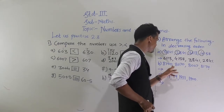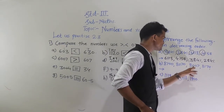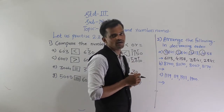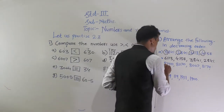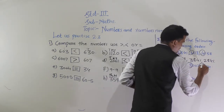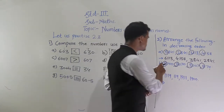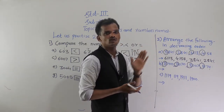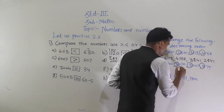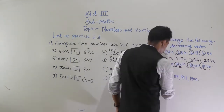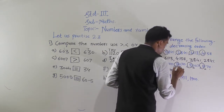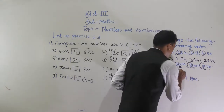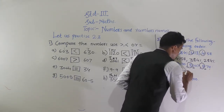Next, arrange 8700, 8070, 8007, and 8170 in decreasing order. These are 4-digit numbers, so compare the thousands place digit — it is the same in all numbers. So compare the hundreds place digit: here 7, here 0, here 0, and here 1. So 8700 is the greatest number, then 8170.